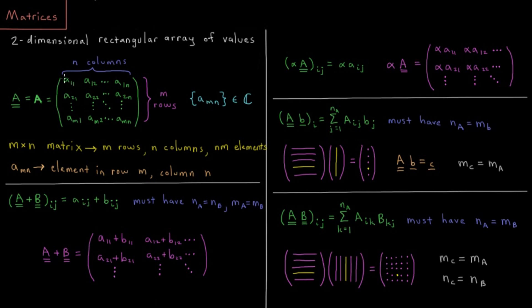We would indicate that by two subscripts inside the array, where the first subscript is the row we're in, one, two, all the way down to row M. The second subscript is the column we're in, column one, two, all the way to column N.